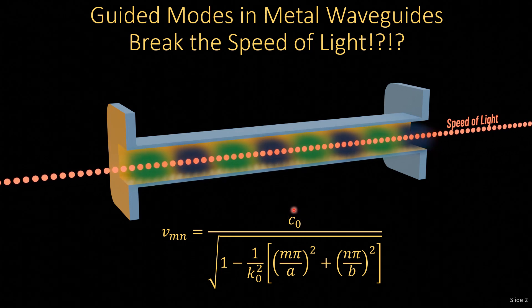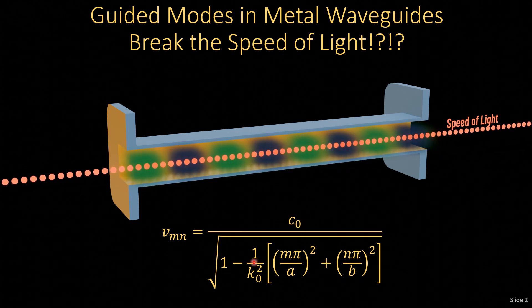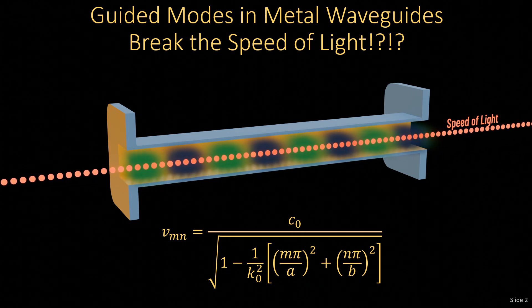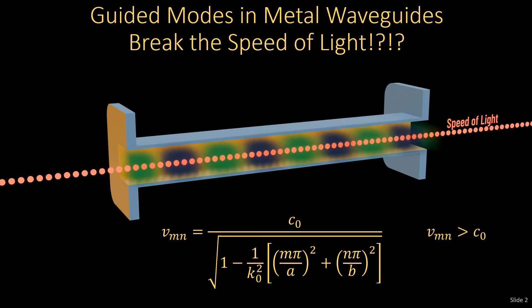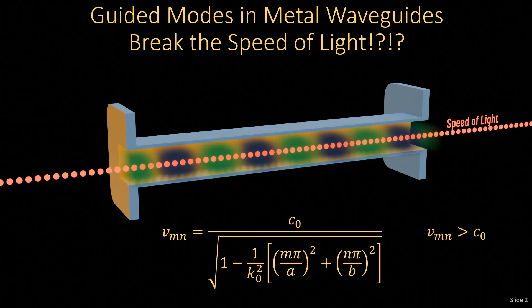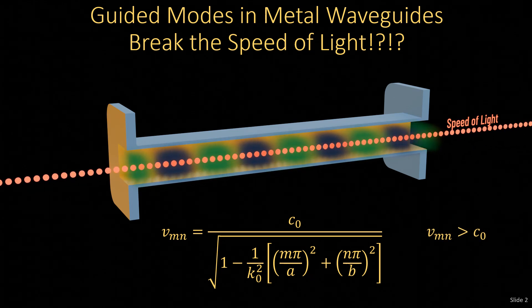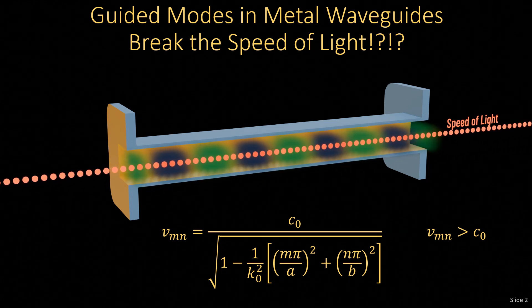Well, if we take the speed of light and divide that by a number less than one, in fact, we get the velocity of all the modes in a metal waveguide always traveling faster than the speed of light.